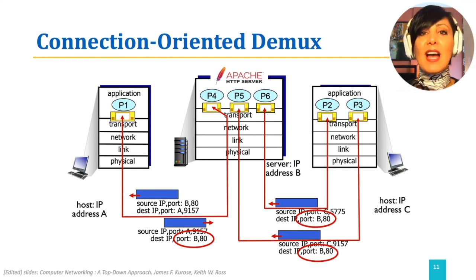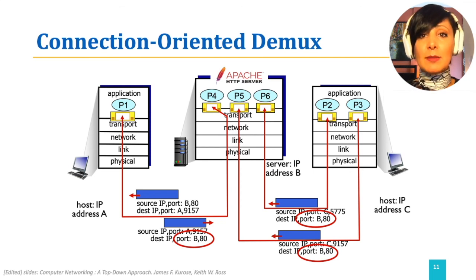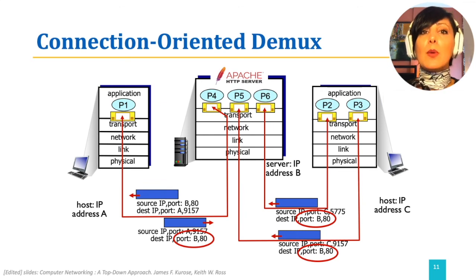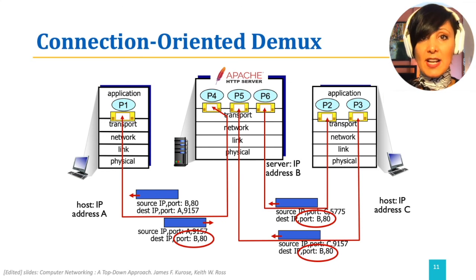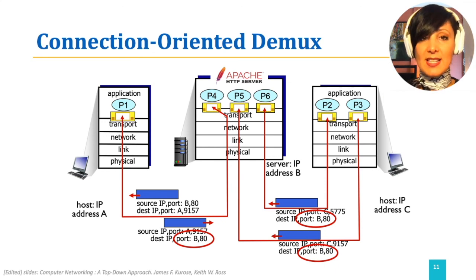Note that the server application is running at multiple parallel processes in this example. This could alternatively be handled with threading, where the same application has different sockets with different identifiers within the same process and its threads.